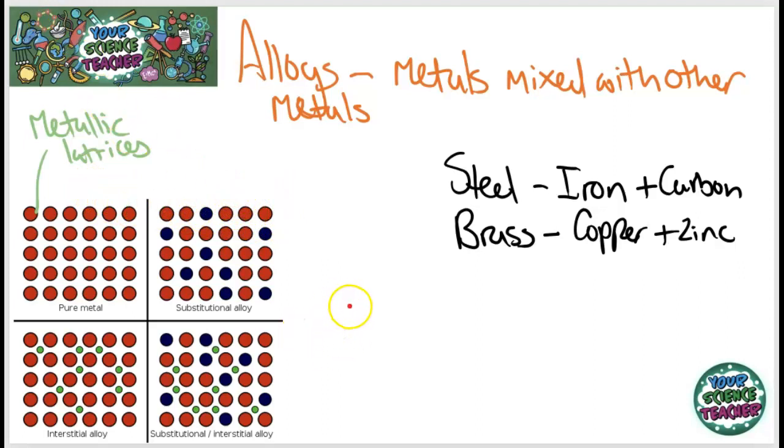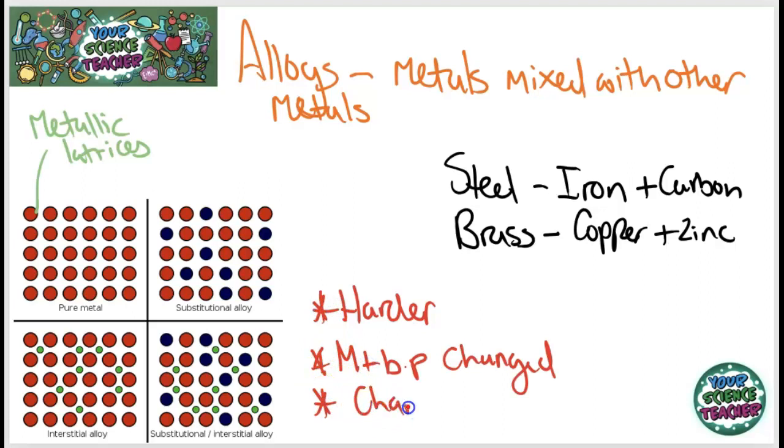So metals that have been changed to make an alloy are often harder. They also often change the melting and boiling point. And there will also be a change in conductivity. It can become a worse conductor as electrons are harder to flow down it. So it might be a worse thermal and electrical conductor.